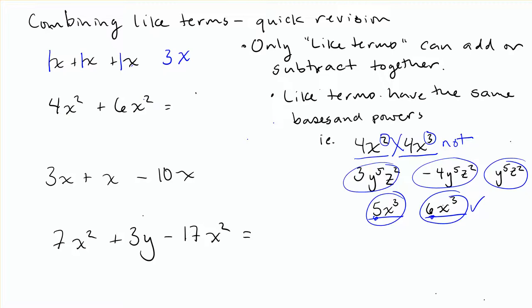4x squared and 6x squared, those are both like terms because they're both an x squared. Think about how many total of those you have. You've got 4 of them here and 6 of them here, so that's a total of 10 of them. 10x squared by adding the 4 and the 6, and leaving the base the same.